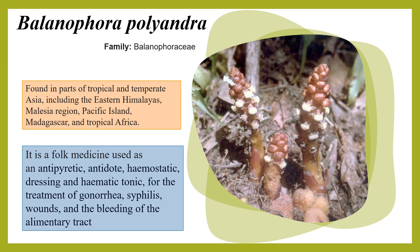Balanophora polyandria is found in parts of tropical and temperate Asia, including the eastern Himalayas, the Malaysian region, Pacific Islands, Madagascar, and tropical Africa. It is used as a folk medicine with properties as an antipyretic, antidote, hemostatic dressing, and hematopoietic tonic for treatment of gonorrhea, syphilis, wounds, and bleeding of the alimentary tract.